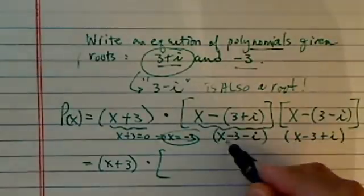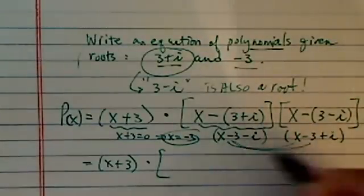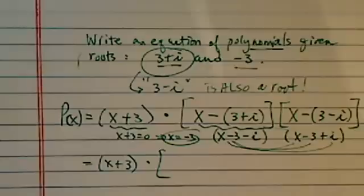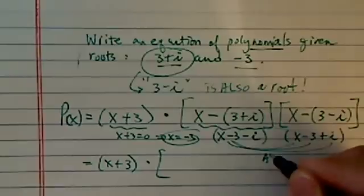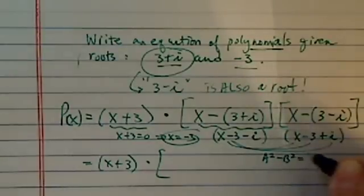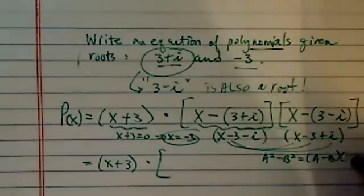Now, you can, if you want, do the foil on each one of them. But it's long and tedious. Over the years, I've shown my students there's a trick. If you know a squared minus b squared is a minus b times a plus b.